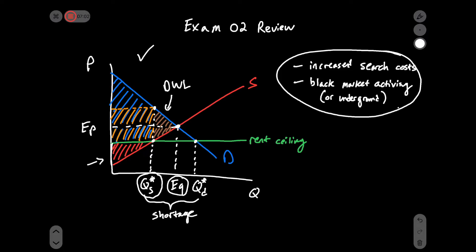Remember, there is a net loss of producer surplus — originally it was a large triangle, then it reduces down to a smaller triangle. In net, so long as there are no increased search costs, black market activity, or other major unintended consequences affecting consumers, they could potentially have a net increase in consumer surplus. But it's more likely the case that they'll have a potential net loss of consumer surplus.